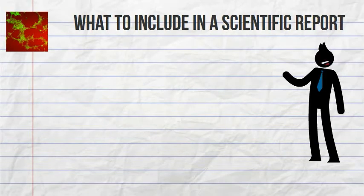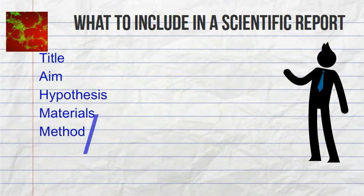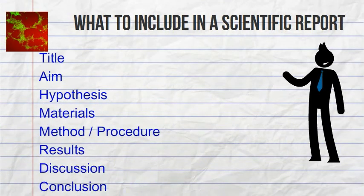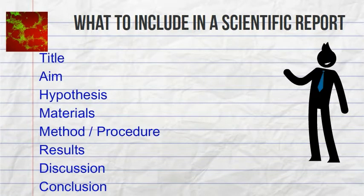You include a few things in a scientific report: a title, an aim, hypothesis, materials, method or procedure, results, discussion, and conclusion.